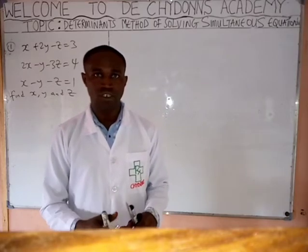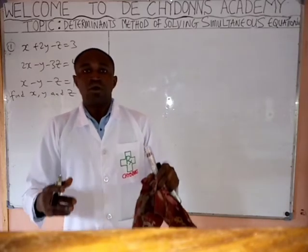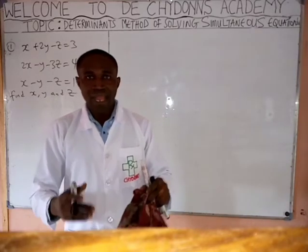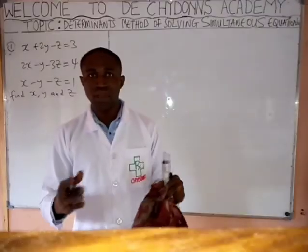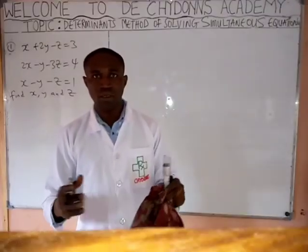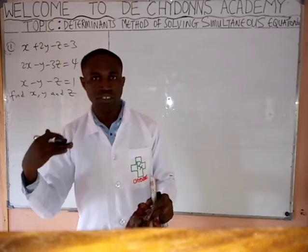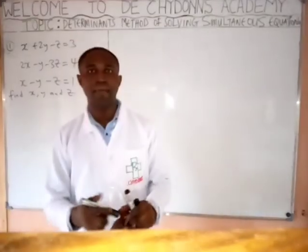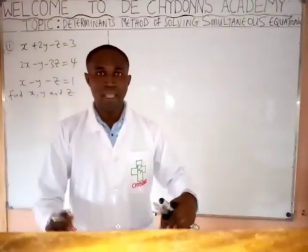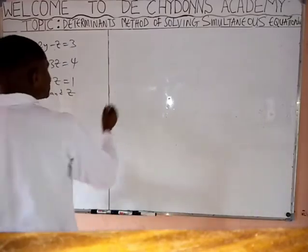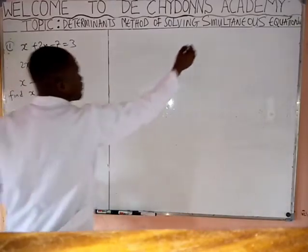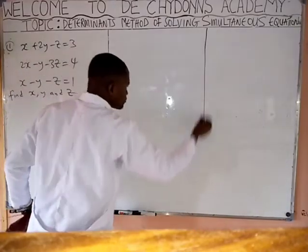Back to the topic: Determinant Method of Solving Simultaneous Equations. You can use the elimination method or substitution method, but we want to see how to use the Determinant Method. To use the Determinant Method, what you have to do is to write down the coefficients of the alphabets.